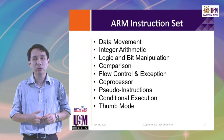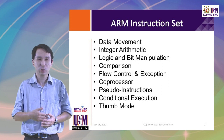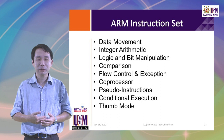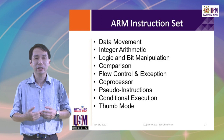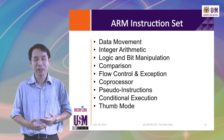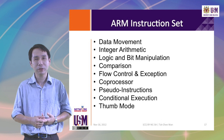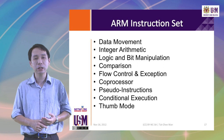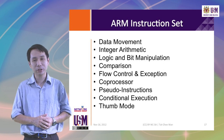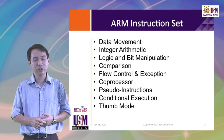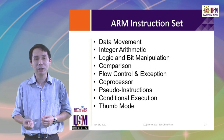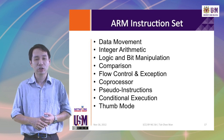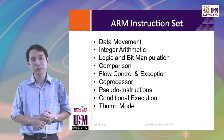Next, we will go into a quick overview of the ARM instruction set. What are the various instructions available for use in the ARM microprocessor? The first are for data movement, then integer arithmetic, logic and bit manipulation, comparison, flow control and exception instructions, coprocessor instructions, pseudo-instructions — which are not really instructions but are provided for convenience — conditional execution instructions, and finally thumb mode instructions.